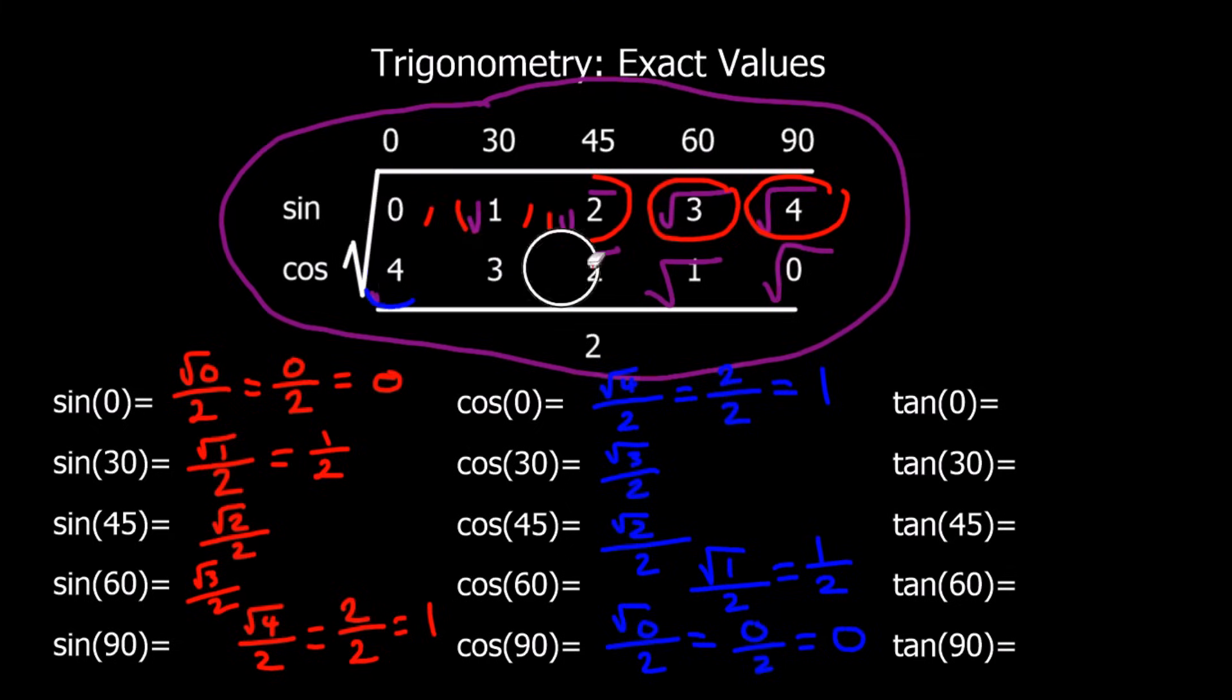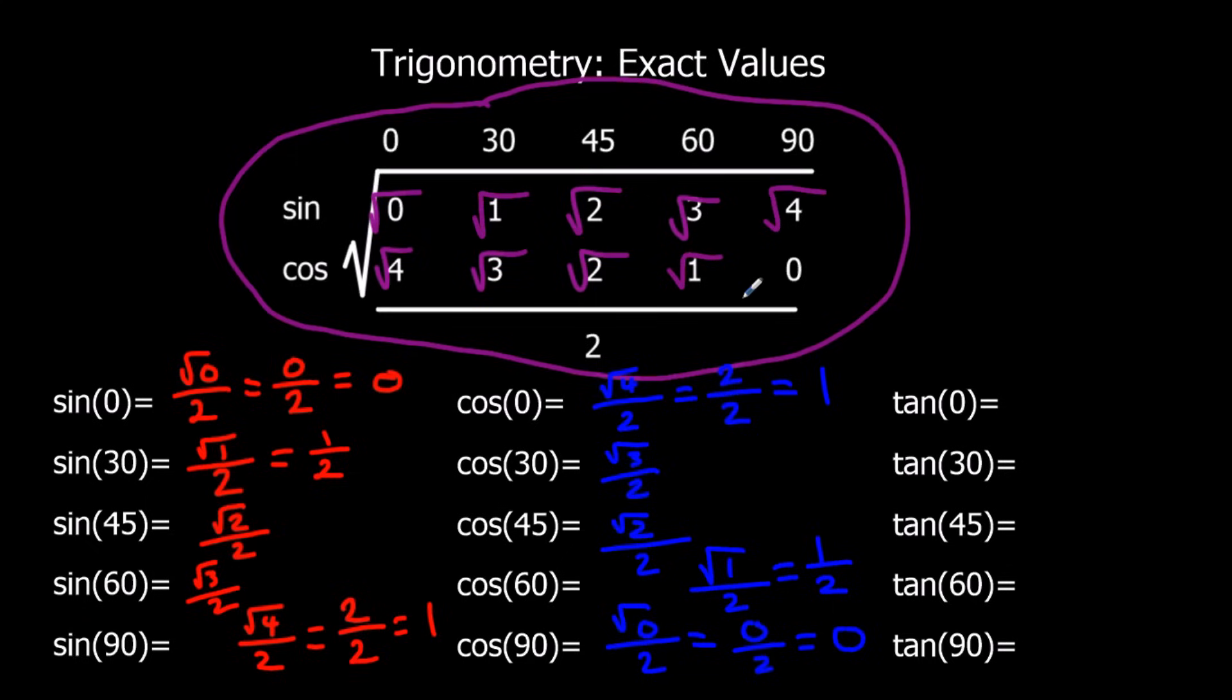Let's have a look at how we'd work out tan from this. For tan 0, if I put the square root signs back, we do this one here divided by the one underneath. So the sin 0 divided by the cos 0. We don't have to worry about the over 2 at all.